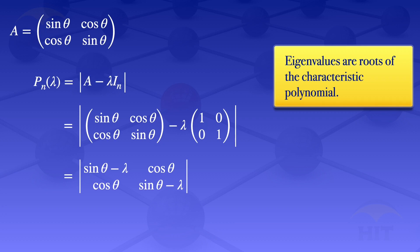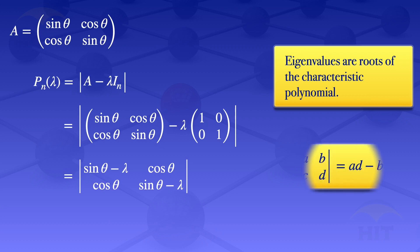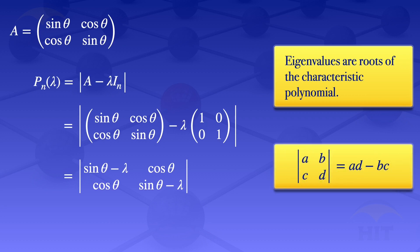For a 2×2 matrix, the determinant of [a, b; c, d] equals ad − bc. Using that formula, our determinant simplifies to (sin θ − λ)² minus cos²θ.